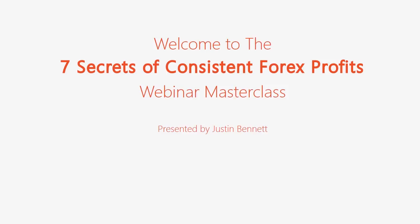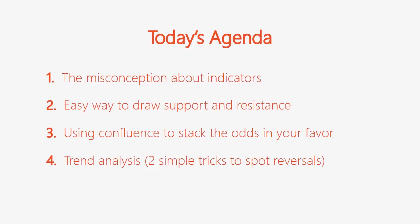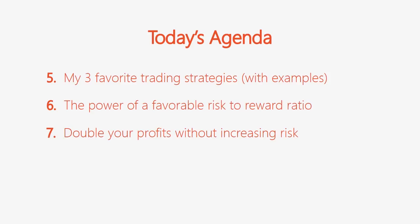The agenda for today's training: first, we're going to talk about a misconception about indicators. We're also going to talk about drawing support and resistance, and I'll show you tricks to find the most accurate levels. We'll cover confluence, two ways to identify potential reversals, three trading strategies including a continuation pattern, a reversal pattern, and a candlestick pattern. I'll also share what risk-to-reward ratio I use, and finally a way to double your profit on one setup without increasing risk.